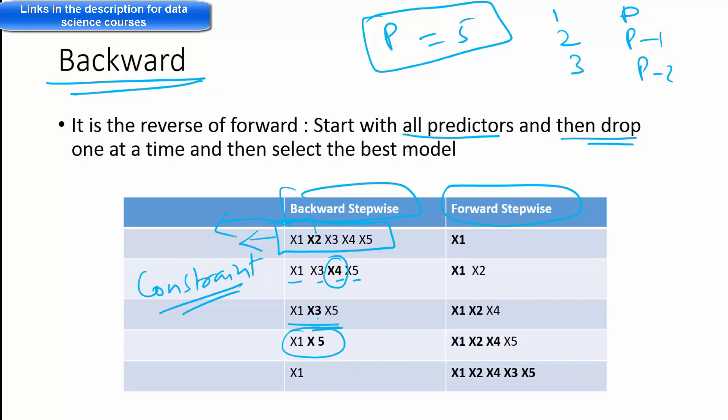So you cannot have a three variable model where X4 has been dropped from the fourth variable model. So you cannot have X4, a combination of X4 in the three variable model. So that is a constraint or taken out from the selection itself. And that's a constraint. So the number comes down. Similarly, the second variable model, X3 cannot be part of it because X3 gets dropped in the third variable model. So here X5 gets dropped. So it cannot be present in the one variable model.